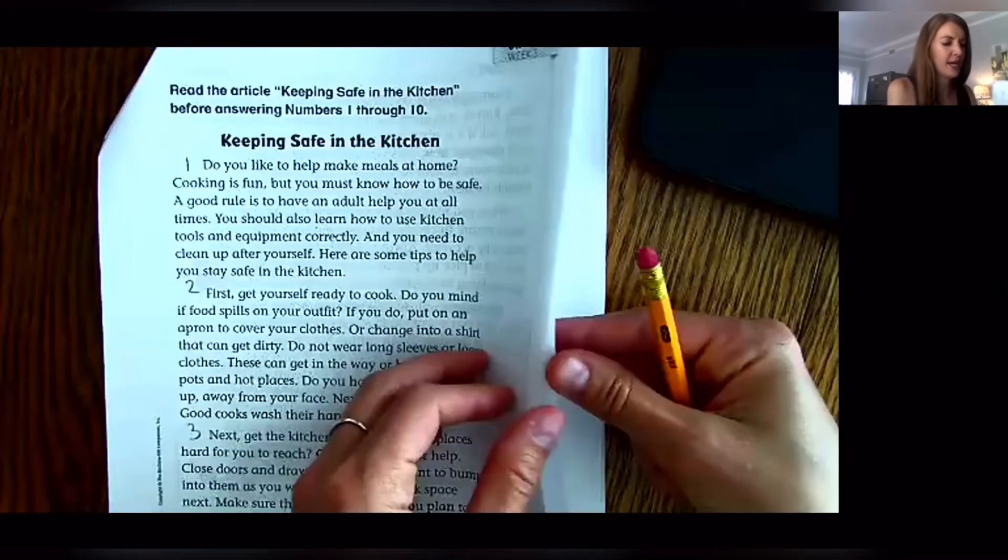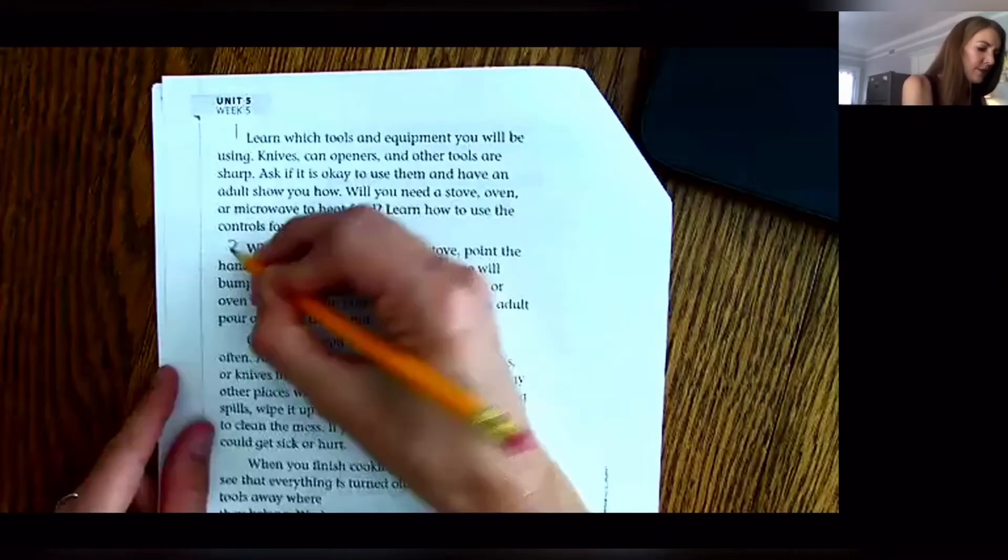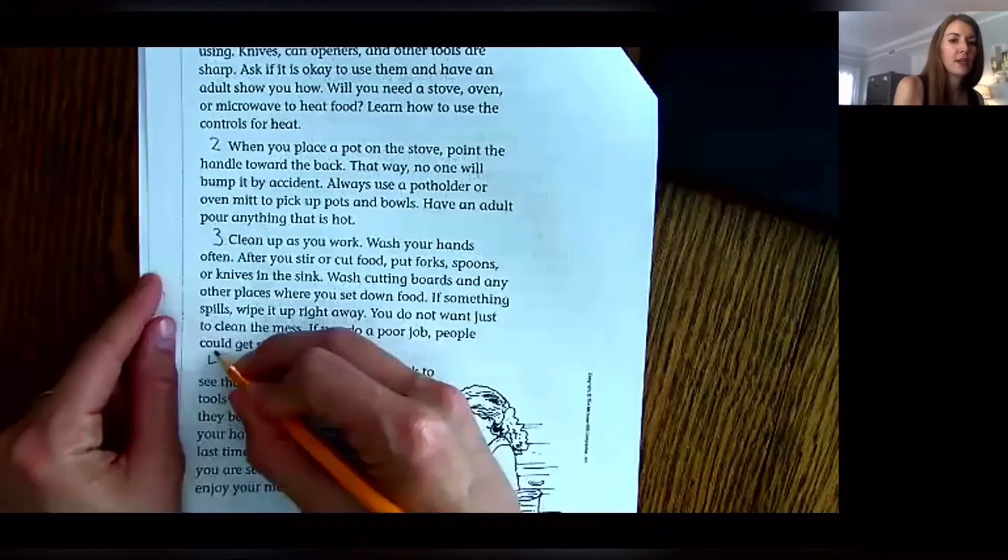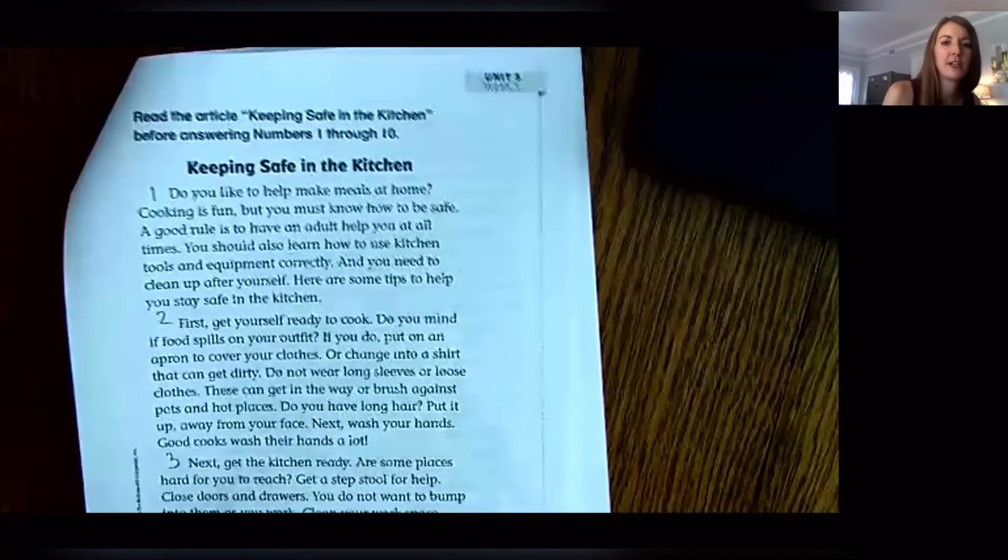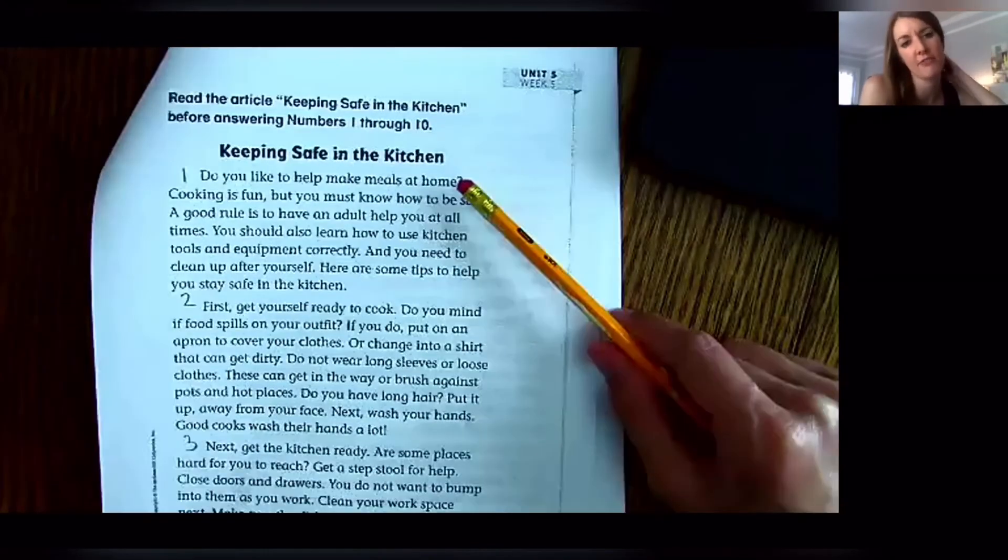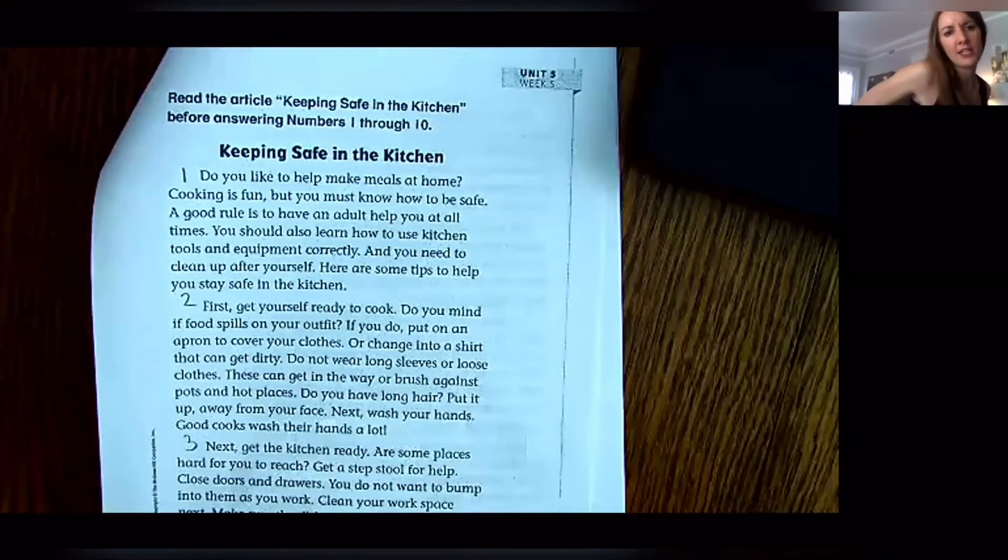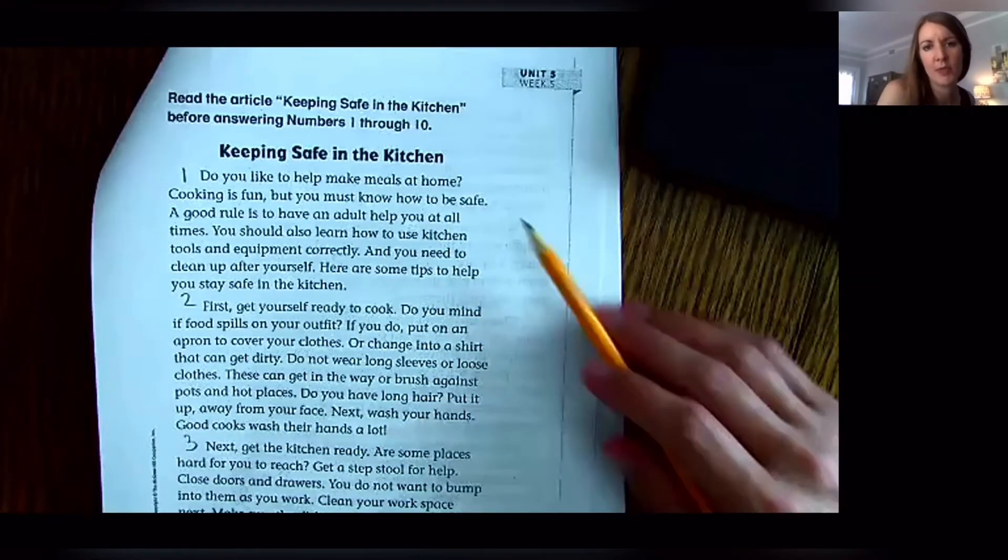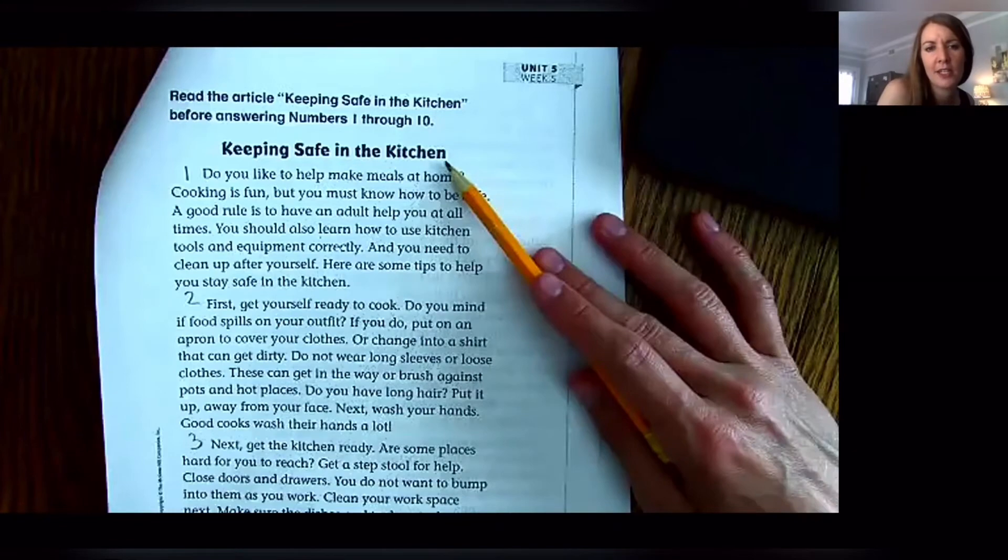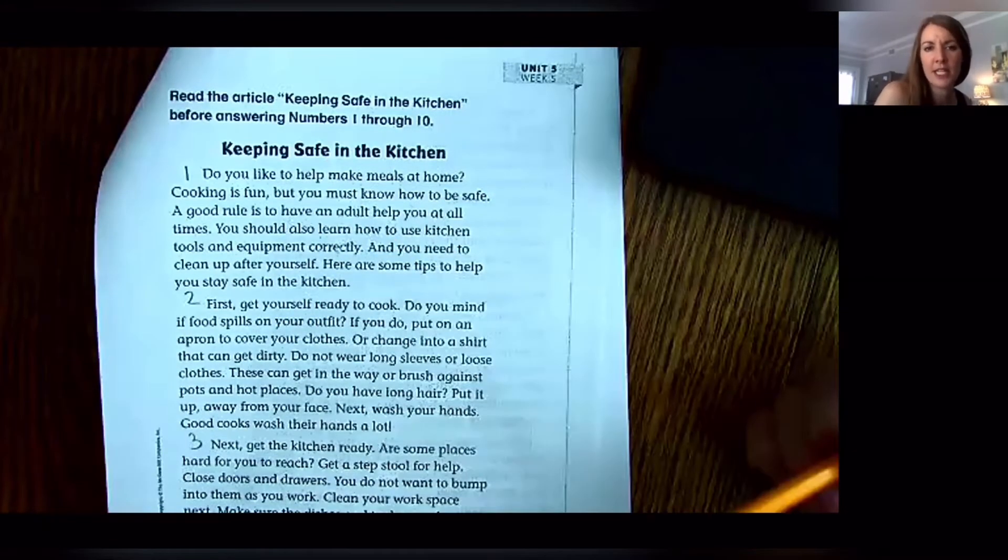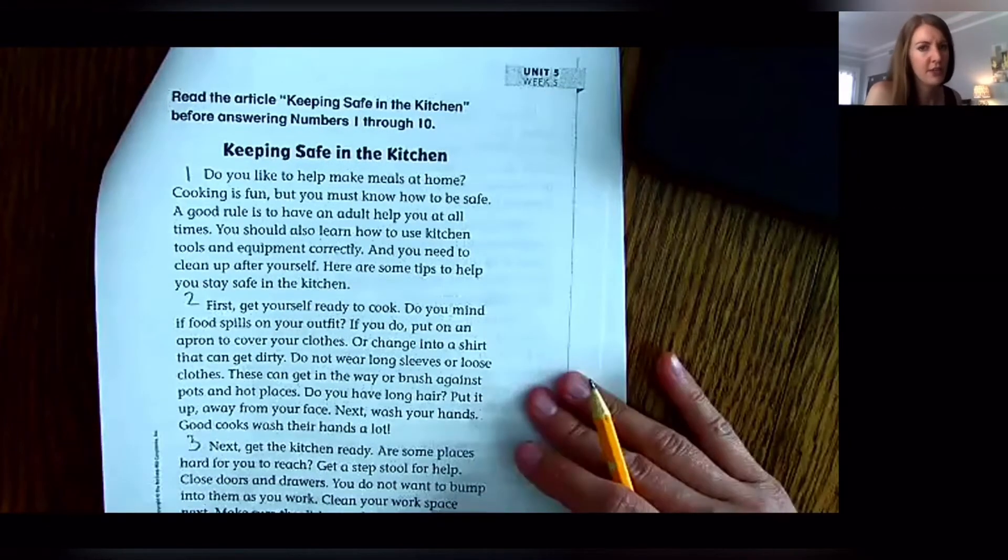And then on the back, I'll check on the back and see one, two, three, four. Okay, so we talked about one of our cold read strategies is to first read the title. So I read Keeping Safe in the Kitchen, and so I'm going to already start making predictions that it's going to be teaching us something about being in the kitchen and keeping safe. Maybe they're going to tell us about knife safety or staying away from a hot stove. I'm not sure yet.